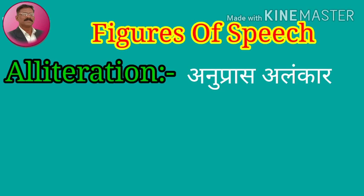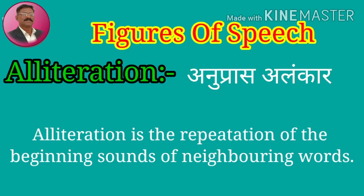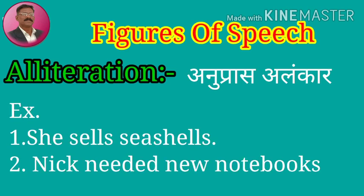First one is alliteration. Alliteration, manjej anupraas alankar, is the repetition of the beginning sounds of neighboring words. For example, 'she sells seashells' — in this sentence, the 'sa' sound is repeated. Next sentence: 'Nik needed new notebooks' — here the 'N' (anna) sound is repeated.